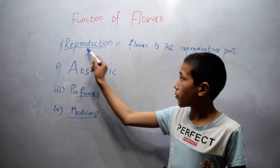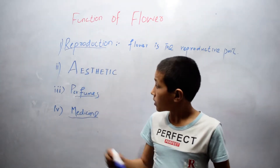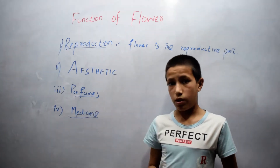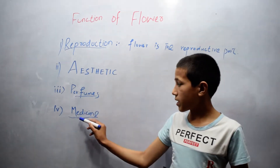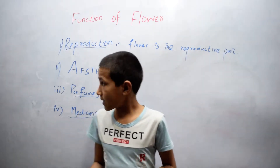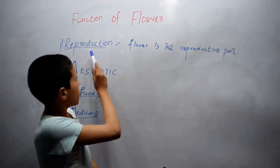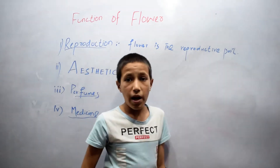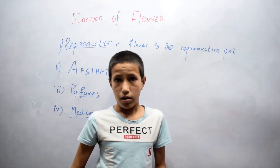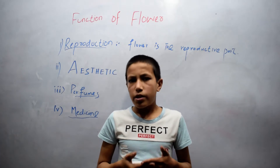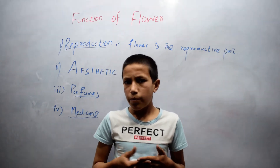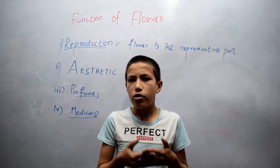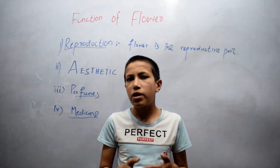The first function is reproduction. The flower is the reproductive part of the plant. It is the process in which the male reproductive cells fuse with the female reproductive cells, and it grows into fruit and seeds after fertilization.